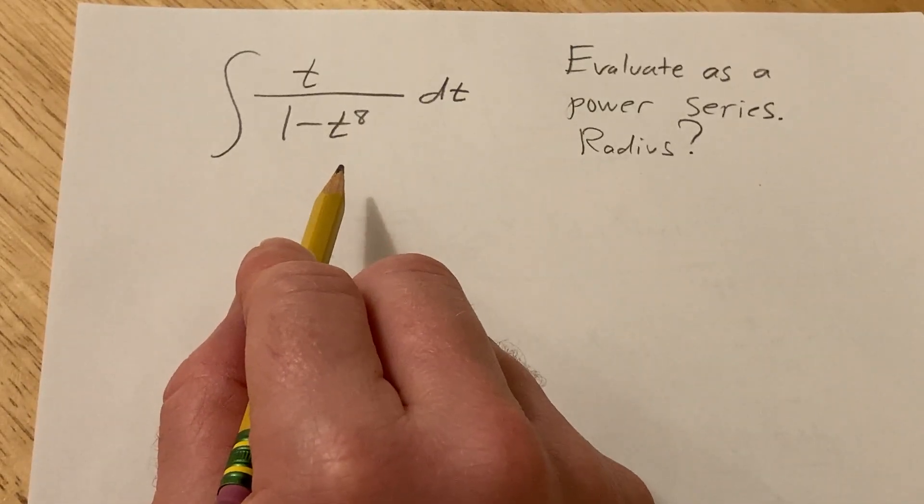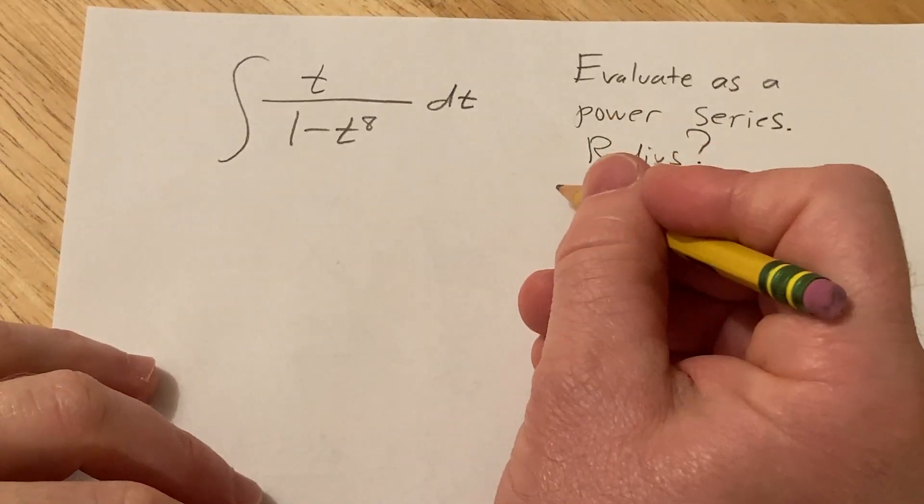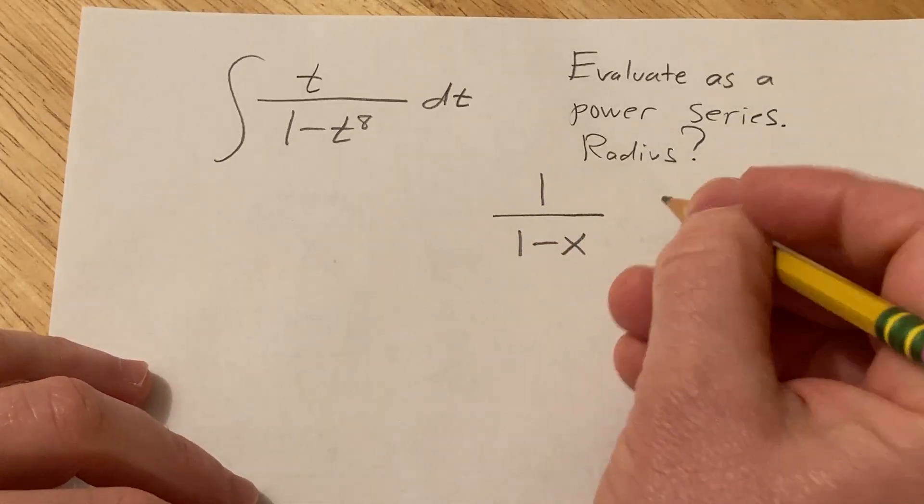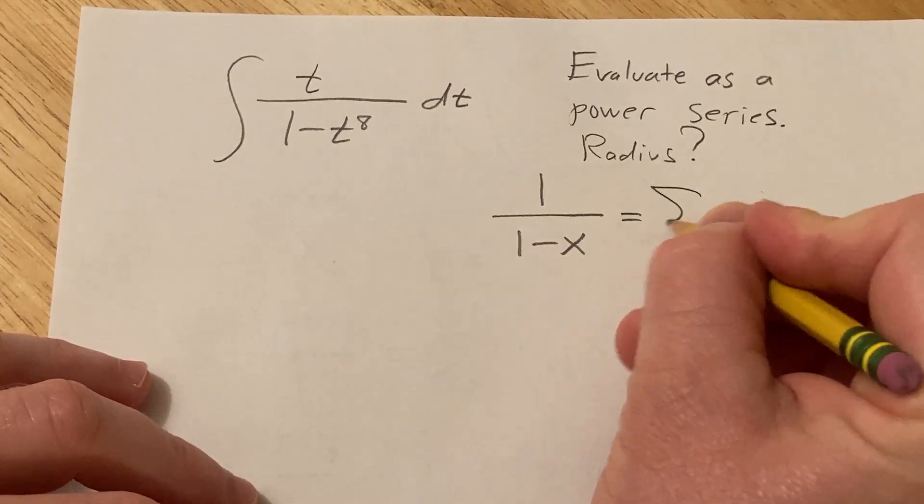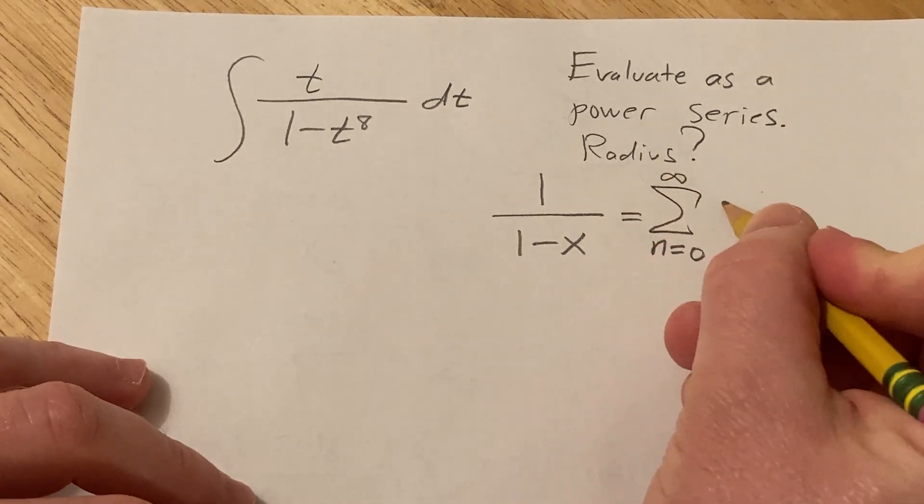So in order to do this we're going to use a formula. Recall if you have 1 over 1 minus x, this is equal to the infinite sum as n runs from 0 to infinity of x to the n.